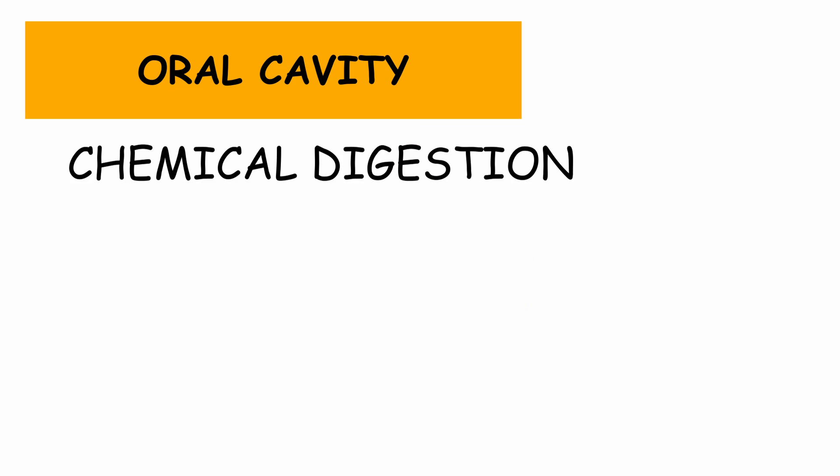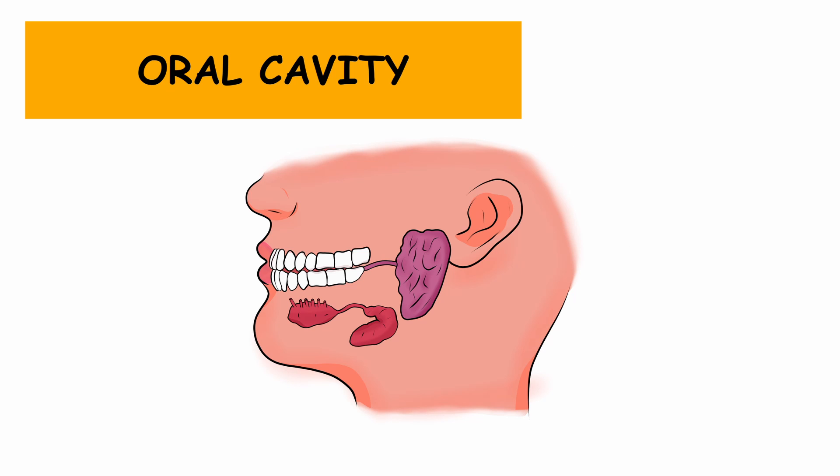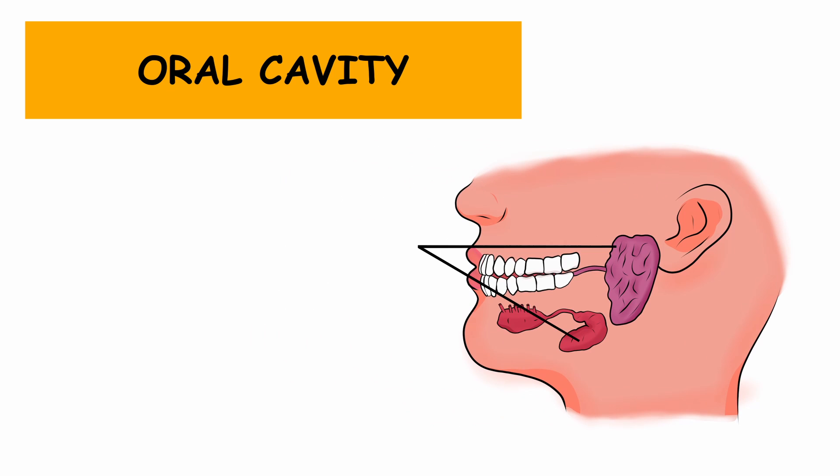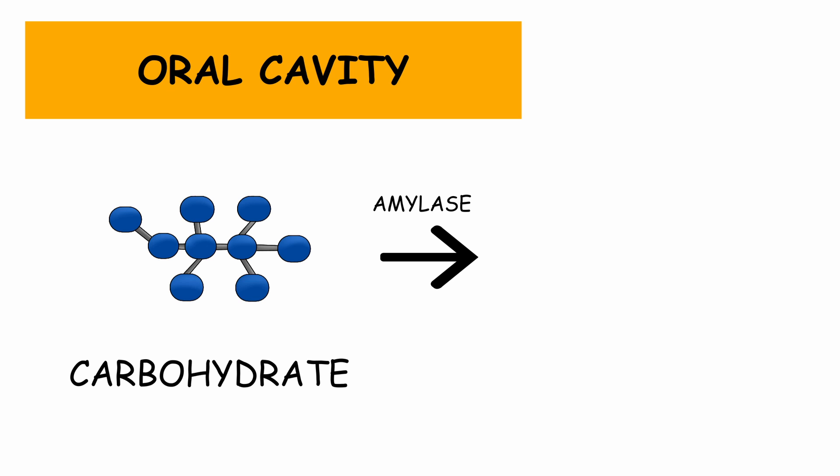Chemical digestion in the mouth is carried out by saliva. The accessory organ of salivary glands located in our mouth secrete saliva, an extracellular fluid that is mostly made up of water. Saliva also contains an important enzyme known as amylase. Amylase is an enzyme that is used to break down large carbohydrate molecules into smaller maltose molecules, which is a disaccharide of carbohydrates.